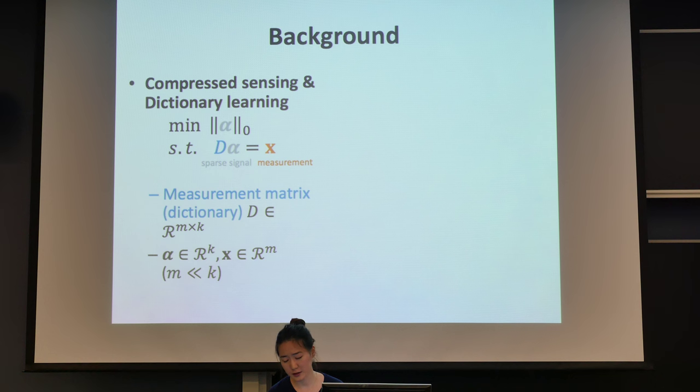In this case, where the signal is really sparse, we don't really have to measure all the values in alpha, but we can just measure X, which is a linear projection of alpha, and it has much less dimension than alpha.